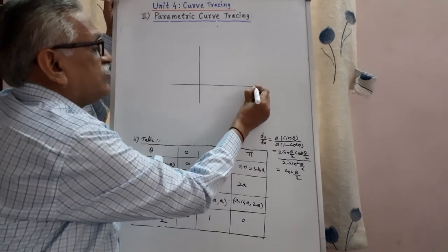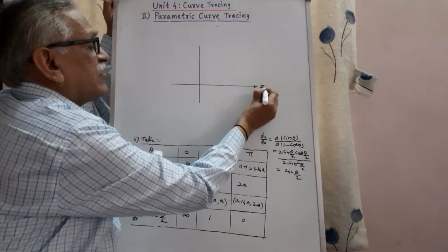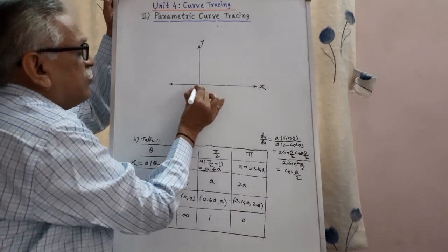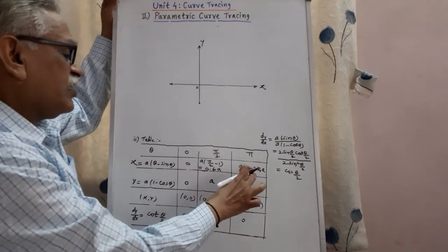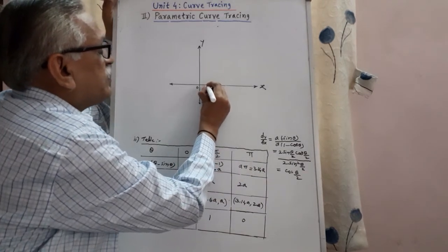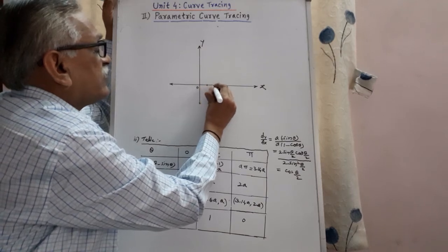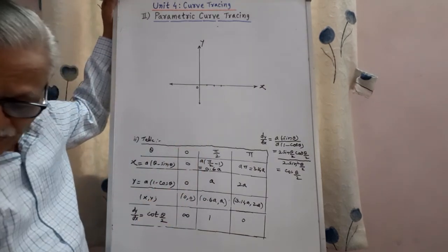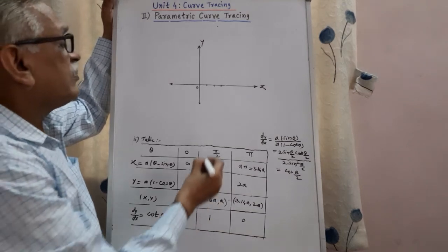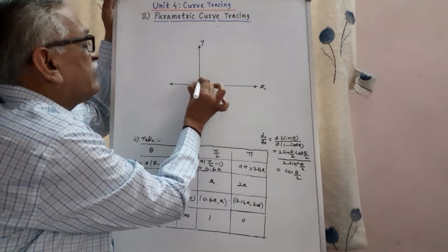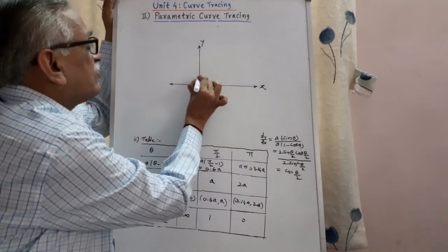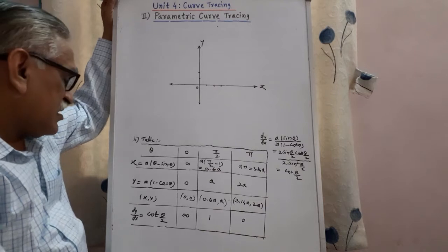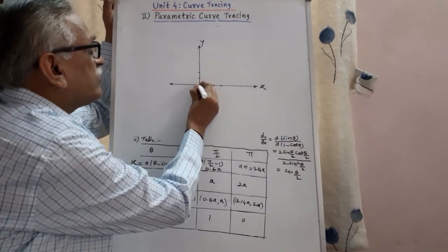We consider the value, this is x-axis, this is y-axis, origin. The maximum value of x-axis is 3.14a, therefore by some suitable scale it is a, 2a, 3a. And y maximum is 2a, therefore a, 2a. And plotting the points, first one is zero zero, origin is one of the points.